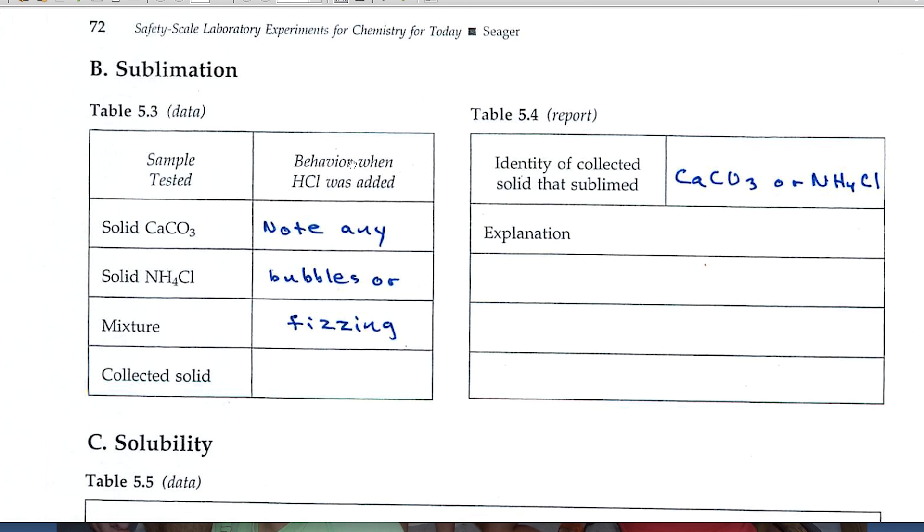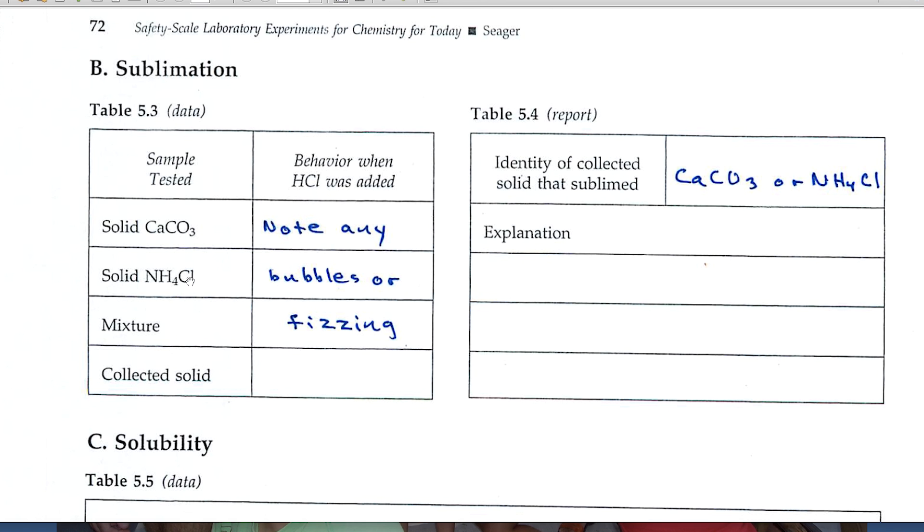And test the solid to see what it is. And the test that we're going to use is the behavior when HCl was added. So we'd add HCl to solid calcium carbonate and note what happens. Remember, you're looking for color changes, a gas evolution, or the formation of a solid that you didn't have before. Those are the three characteristics that are most commonly indicative of a chemical change.